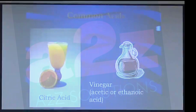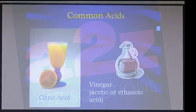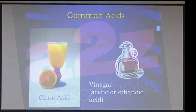Now let us see the common acids which we come across in our daily lives. All of you have seen lemon — lemon contains citric acid. Similarly, vinegar which is generally put in noodles and chow mein contains acetic acid. Substances like spinach contain oxalic acid, and tamarind contains tartaric acid. So these are some common acids which you come across in your daily lives.